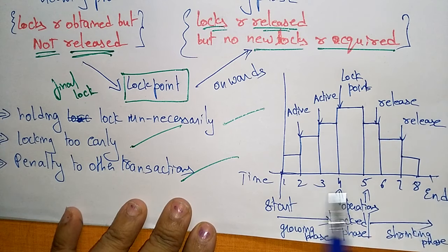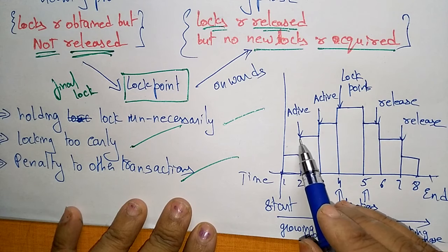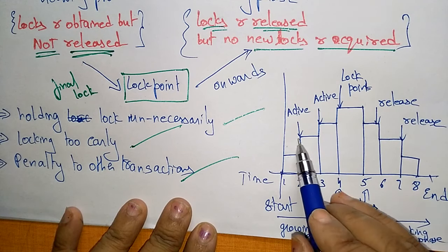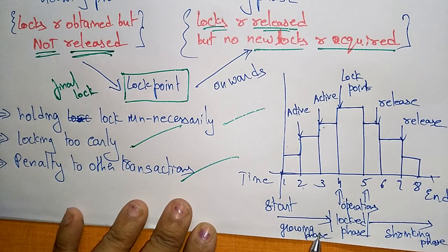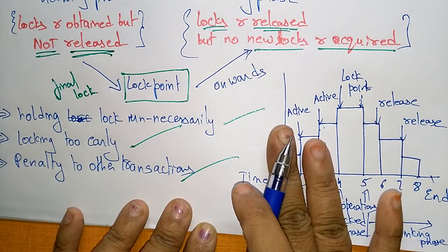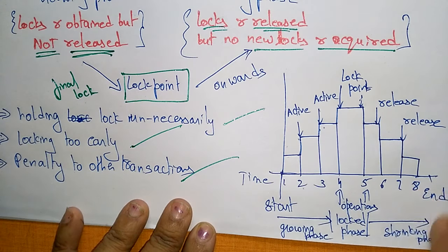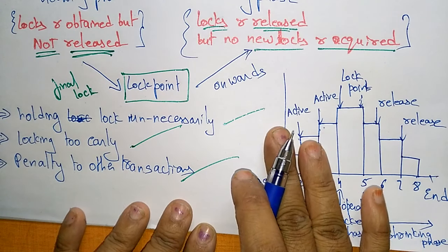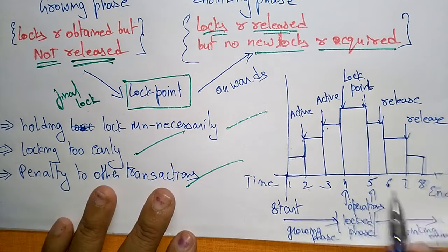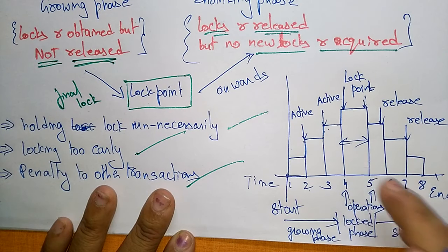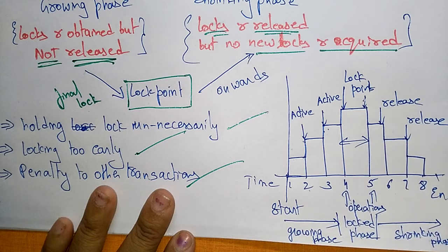In this diagram, we have taken eight transactions. Whenever a lock is active, the growing phase is active. When the growing phase sees the lock point, it stops creating locks and the shrinking phase is allowed to release whatever locks were created by the growing phase. The operations are performed at the lock point.